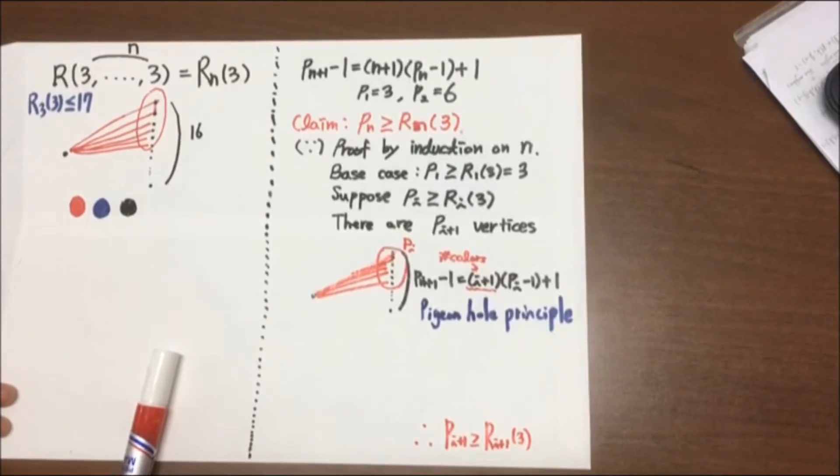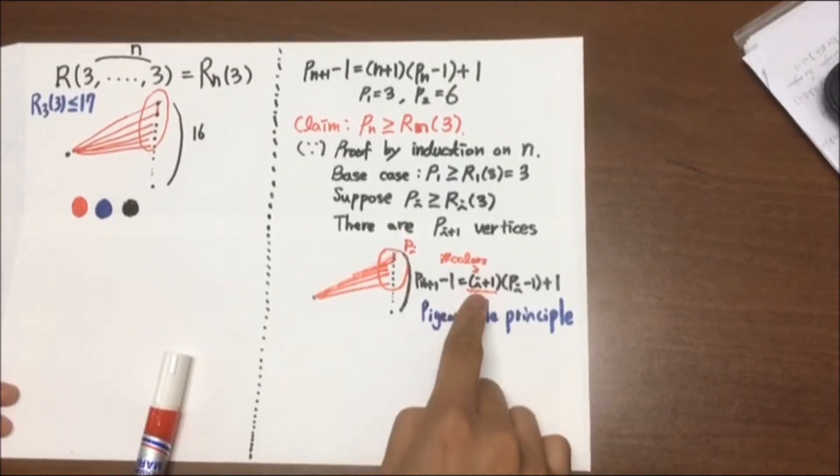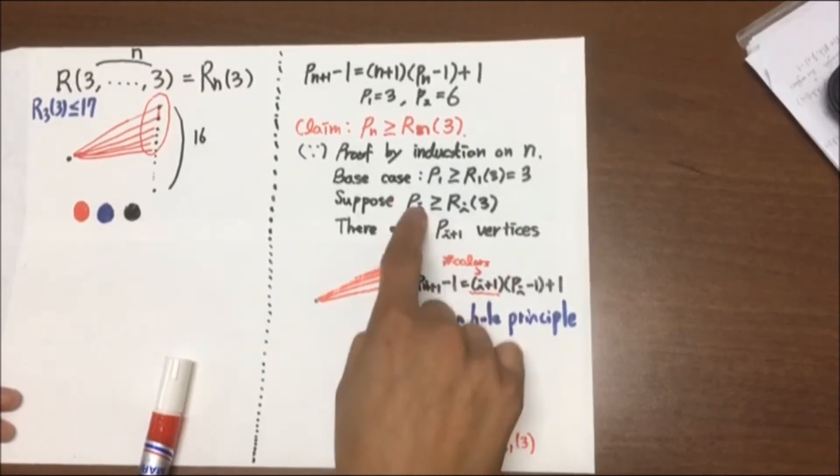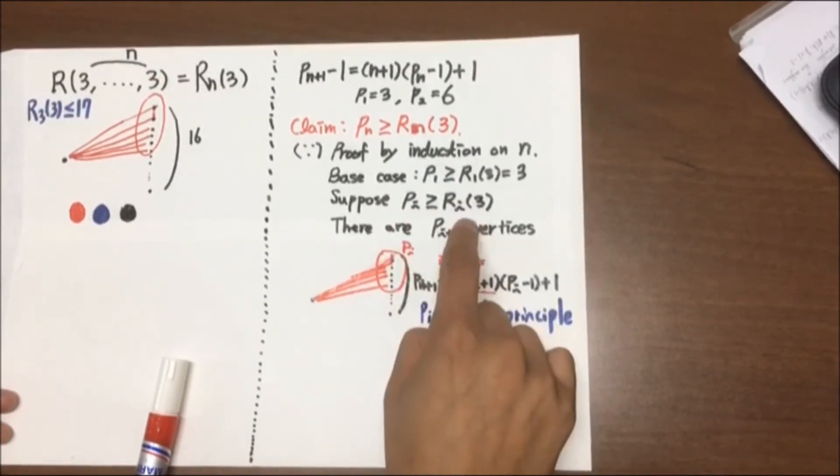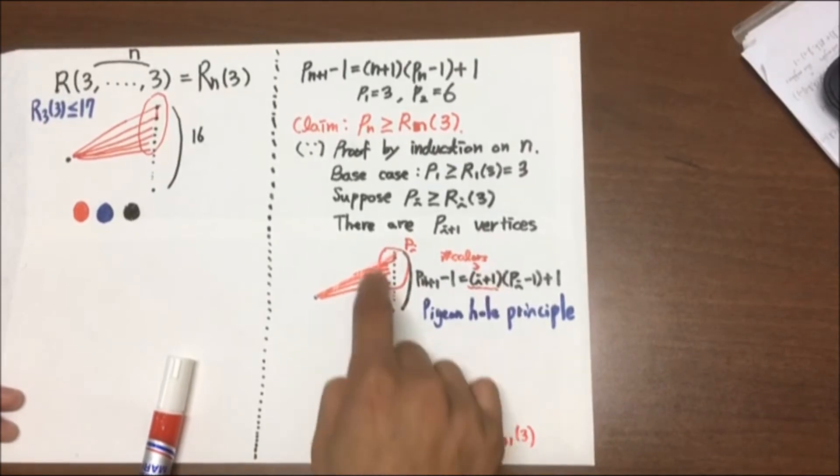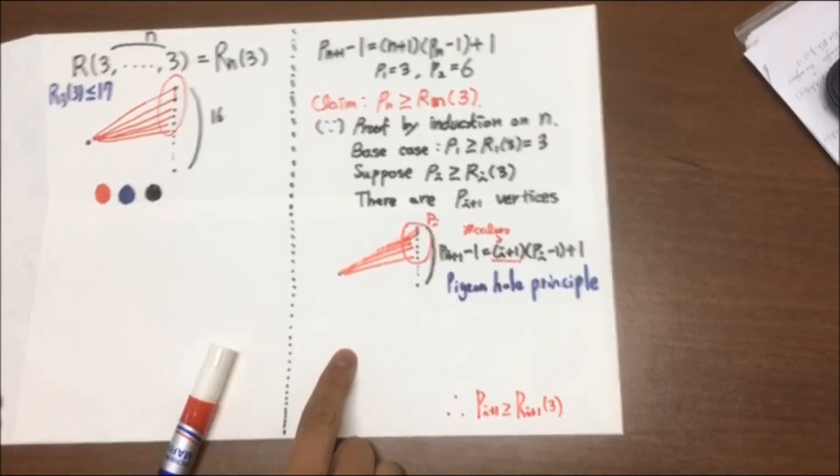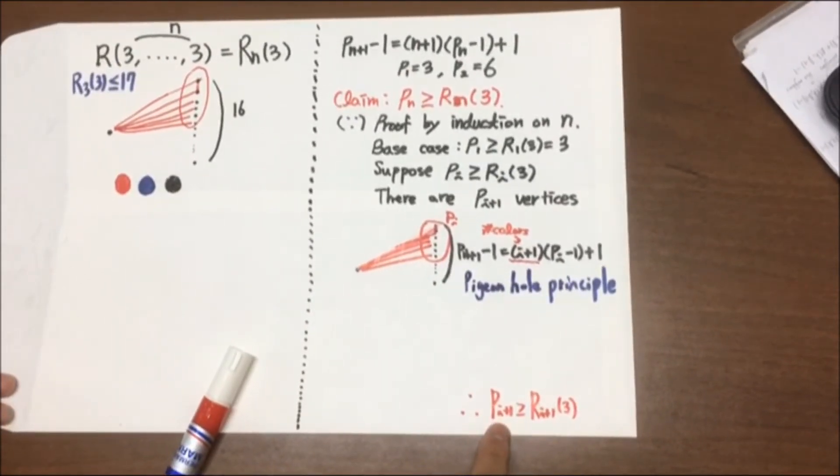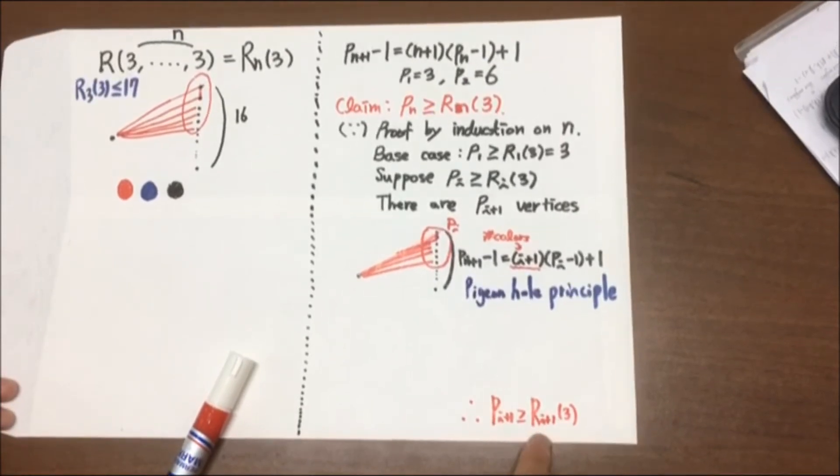So we must color them with other I colors. And by the inductive hypothesis that P_I is greater than or equal to R_I(3), it creates monochromatic K_3 in here. So therefore P_{I+1} is greater than or equal to R_{I+1}(3).